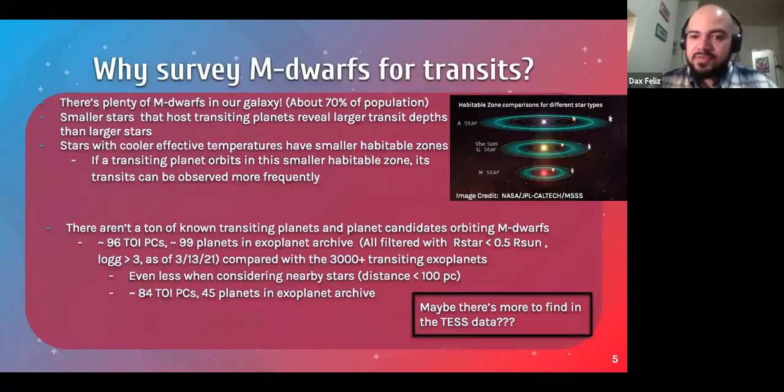So why did I want to focus on M dwarfs for a transit survey? Well, there's plenty of them in our galaxy. They're about 70% of our population. And because these stars are typically much smaller than stars like the sun, any planet that happens to transit in front of them will block more of their surface area, meaning they have larger transit depths. And because these stars are smaller, they are cooler, effective temperatures, meaning that if there is a habitable zone around these stars, that's going to be much closer to the star than for stars like the sun or stars like A stars or O stars, as depicted in this diagram.